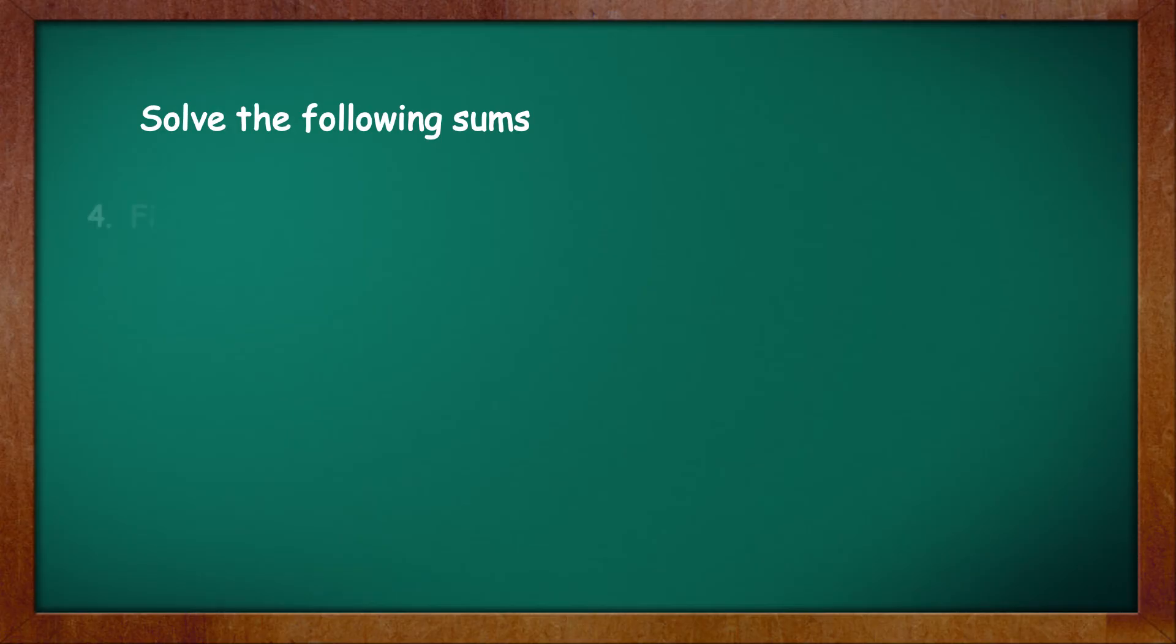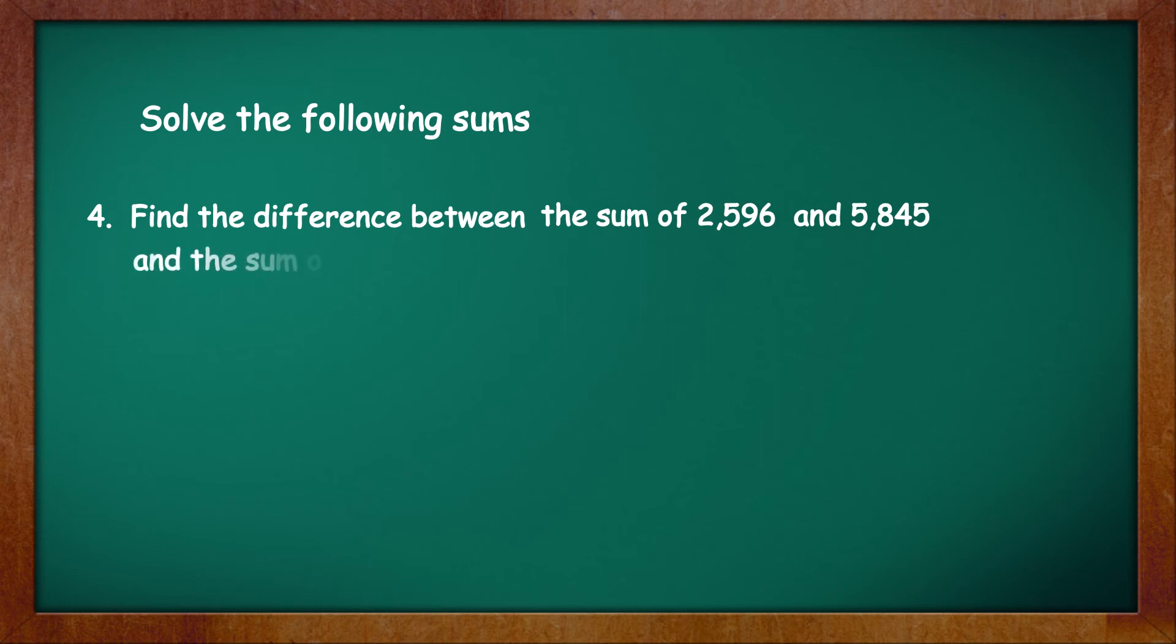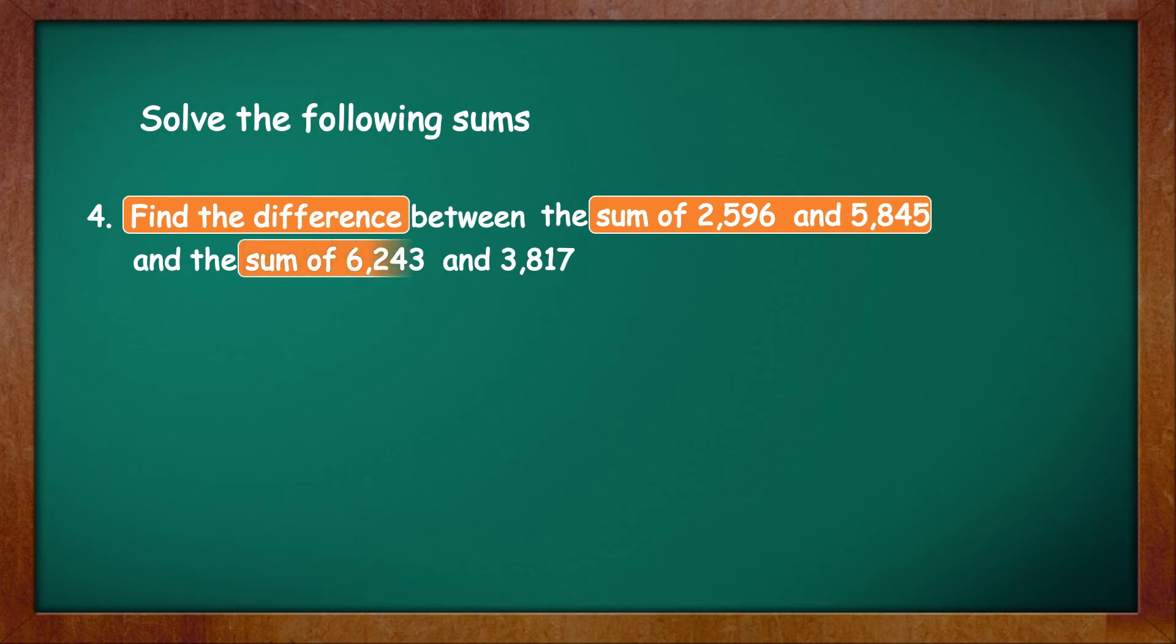One more sum. Find the difference between the sum of 2,596 and 5,845 and the sum of 6,243 and 3,817. Here, you have to find the difference between the sum of 2,596 and 5,845 and the sum of 6,243 and 3,817.